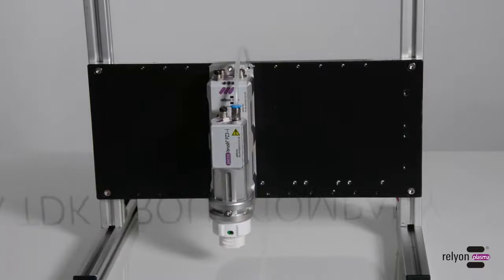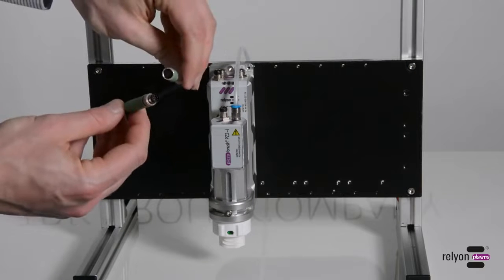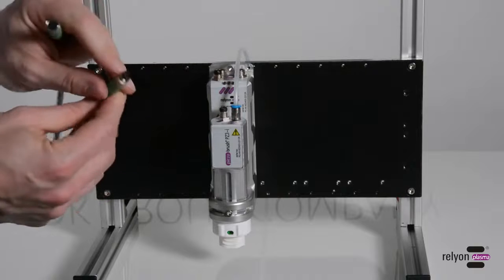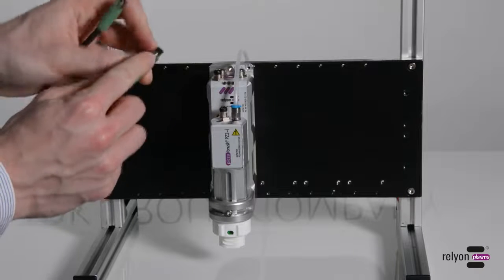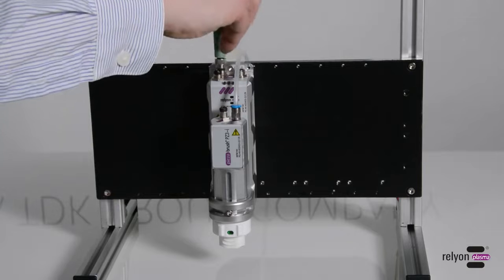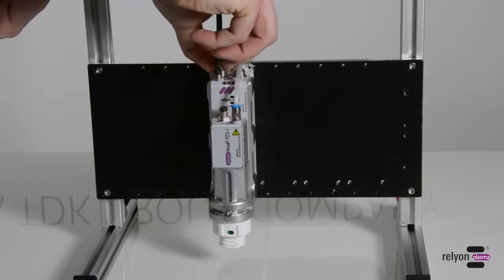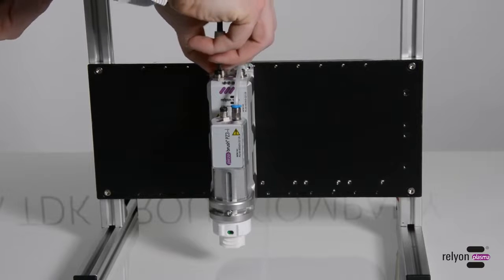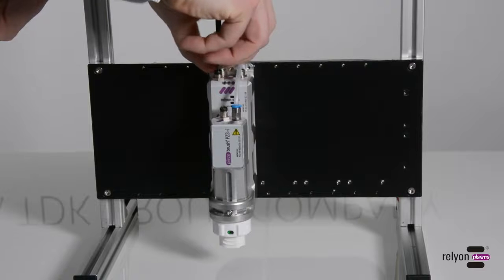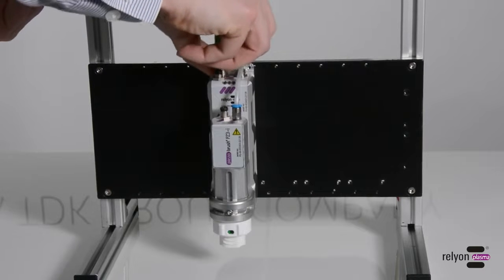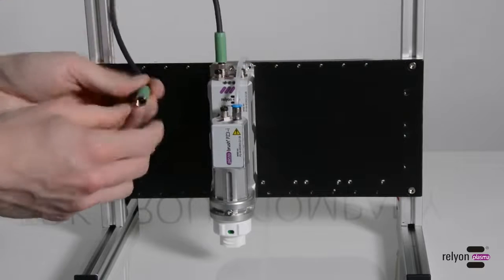The connection line supplied has coded plugs, like the other connection lines. This means that you cannot connect them in the wrong place. Insert the plugs into the driver housing and the module carrier and tighten them by hand. The two additional connection lines for the power supply and for communication are connected in the same way.